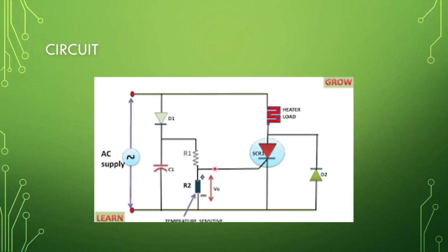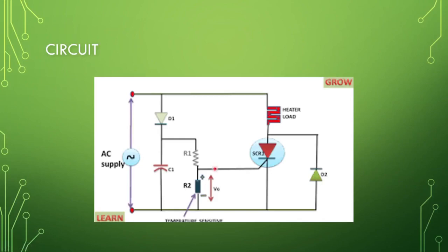This is the circuit diagram. We can control heat with the use of the silicon controlled rectifier. An AC supply is provided from the input, which is connected to diode D1, capacitor C1, the silicon controlled rectifier, diode D2, and the heat load. In the middle, resistor R1 and resistor R2 are connected. R2 is a sensitive element because its resistance decreases when heat is increased, and its resistance increases when heat is decreased.